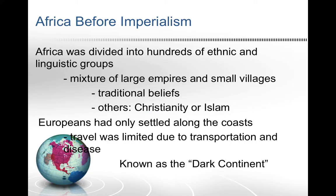Before imperialism, Africa was divided into several hundred ethnic and linguistic groups — small tribes, empires, and villages with very traditional African beliefs and culture. African religions were specific to tribes and villages, but the two other major religions present were Christianity and Islam, with Islam more popular in northern Africa near Egypt, closer to the Middle East.